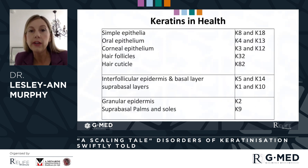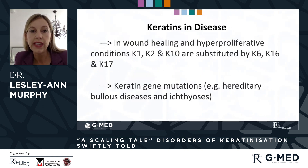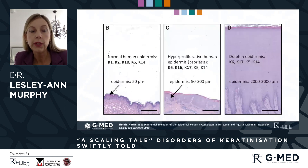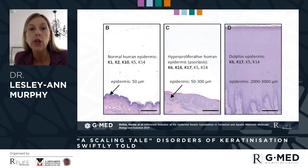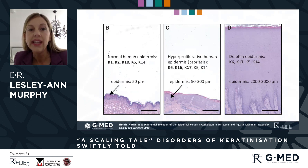These keratins, even in health, are distributed in different abundance at different epithelial surfaces, can be induced by hyperproliferative states, wound healing, and photoexposure. By way of example, showing the normal human epidermis where K1, K2, and K10 are found in greatest number, contrasting with the hyperproliferative psoriasis state where K6, K16, and K17 are most influential. And if you contrast this even with the hugely thickened dolphin epidermis — five to six times the thickness of normal human epidermis — K6 and K17, the inflammatory or proliferative keratin genes, are most abundantly expressed.